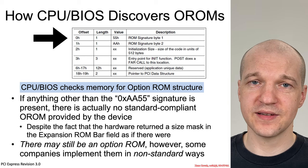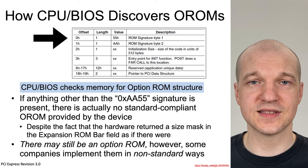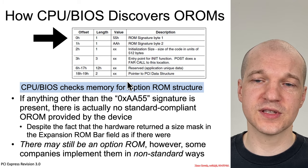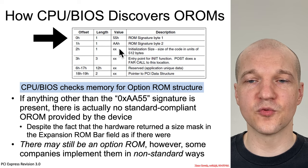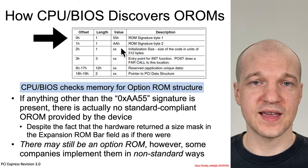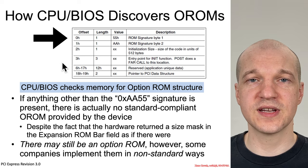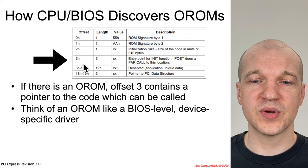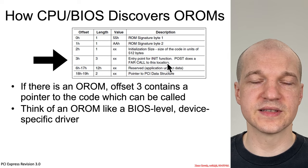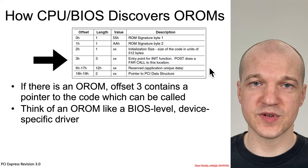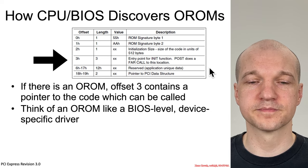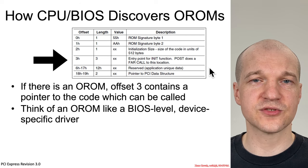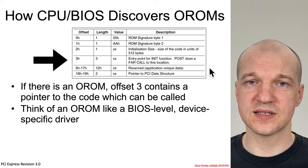Once there is a memory-mapped copy, the BIOS is not actually supposed to jump into it without doing a little sanity checking of data structures expected at the beginning. Specifically, the 0th byte is expected to be 0x55 and the 1st byte is expected to be 0xAA. If that's not the case, it's not treated as a valid Option ROM and the BIOS shouldn't jump into the code. But if it is valid, at offset three there is an entry point specifying where in this memory-mapped region to jump to execute the code.